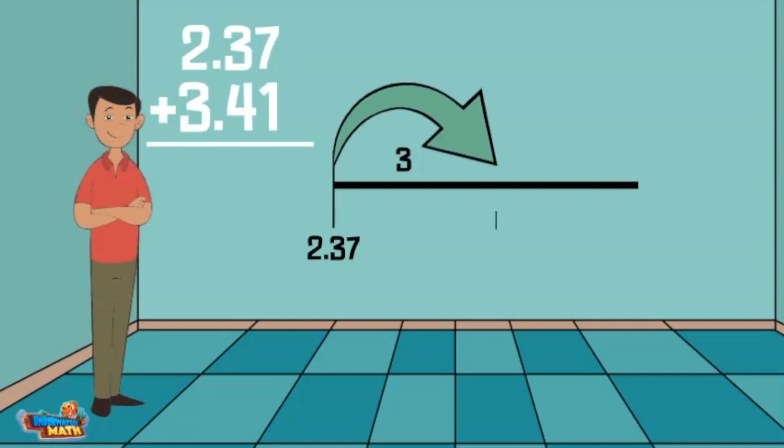I now add forty hundredths to five and thirty-seven hundredths for a total of five and seventy-seven hundredths. Finally, I add one hundredth for a grand total of five and seventy-eight hundredths.